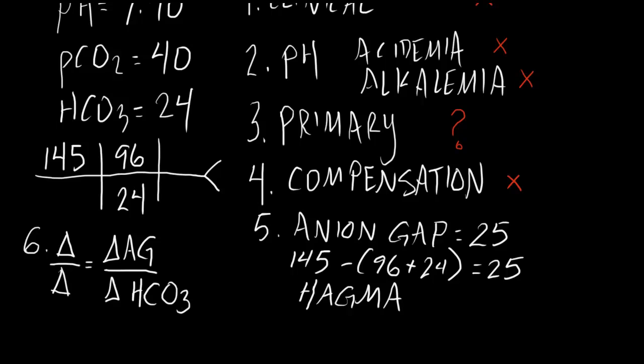If we have a patient who has an anion gap of 25, I would expect the patient's bicarb to be much lower than 24. And the delta-delta will help us figure this out.